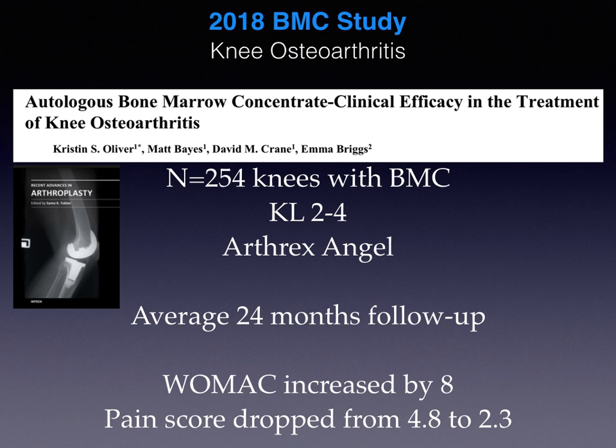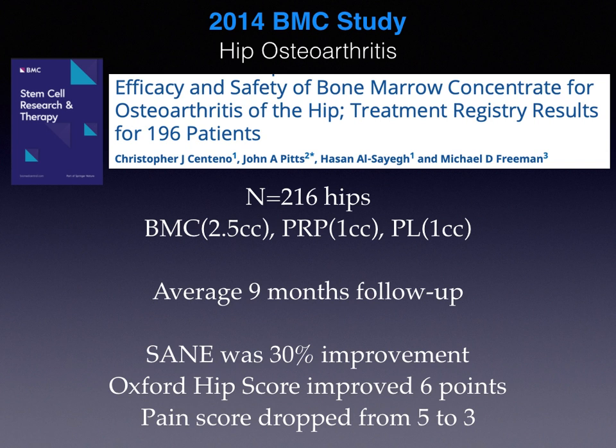What about the hip? Here's a study published by Centino, Pitts, and colleagues in Stem Cell Research and Therapy in 2014. In this study, 216 hips were treated with a combination of BMC, PRP, and platelet lysate, with an average follow-up of nine months. They noted a 30% improvement in the patient-reported SANE score, and functional outcome measures improved — the Oxford hip score improved by six points at just under a year of follow-up.